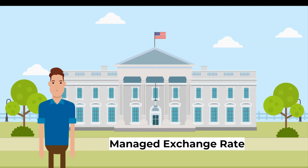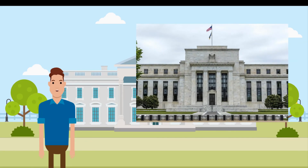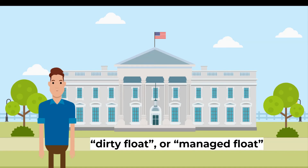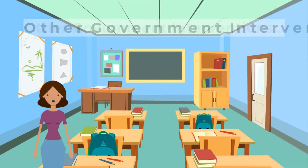A managed exchange rate occurs when there is official intervention by a government or an agency such as the central bank to determine the value of a country's exchange rate. It is possible to manage both fixed and floating exchange rates. For example, the Federal Reserve may enter the foreign exchange market as either a buyer or seller to stabilize short-term fluctuations in the value of the US dollar. To limit a fall in the dollar, the Fed will buy dollars; to prevent a rise, it will sell dollars. Such intervention is known as a dirty float, or more correctly, a managed float.